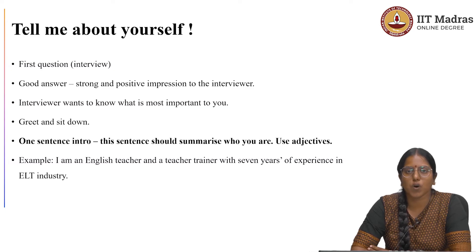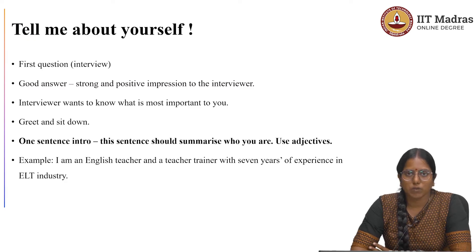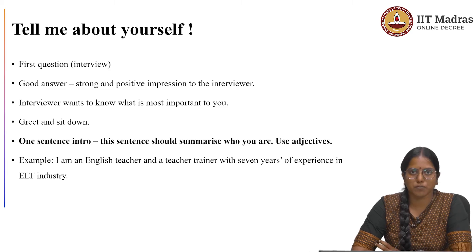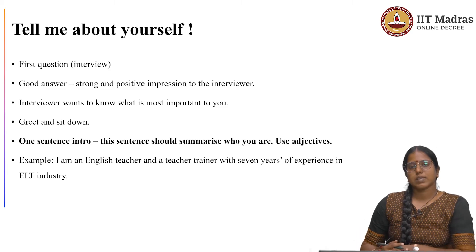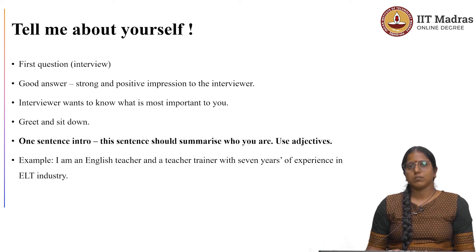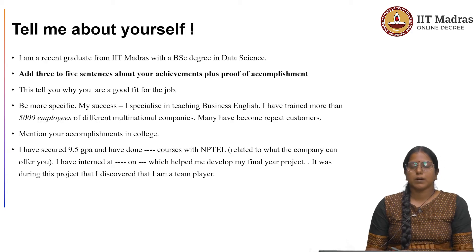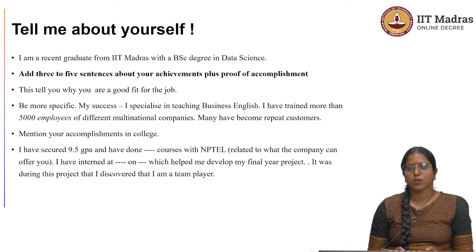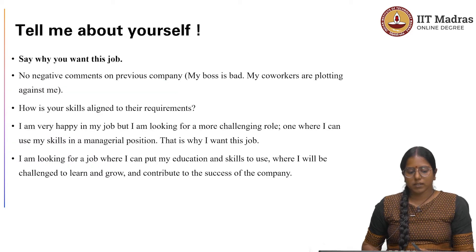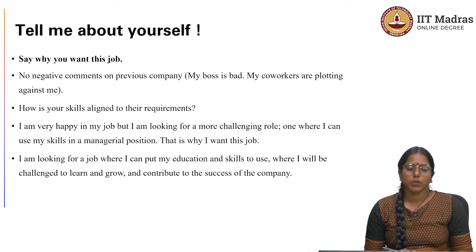So as you walk into the interview hall, greet with a smile and sit down. Now I am going to tell you how to answer this question. It has three stages or three subsections. The first section is where you give your one-sentence introduction. The second part is where you need to add three to five sentences about your achievements plus proof of accomplishment. And the third subsection is where you say why you want this job.